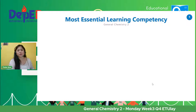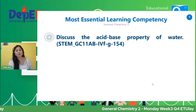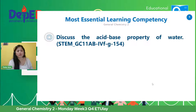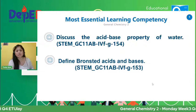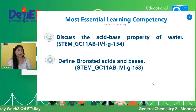So the most essential learning competency that we're going to discuss this afternoon will be to discuss the acid-base property of water. It has a code stem GC11AB, quarter 4, week F2G, objective number 154. And also, define Bronsted acids and bases, which has a code stem GC11AB, AB acid-base, quarter 4, week F2G, objective number 153.